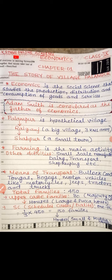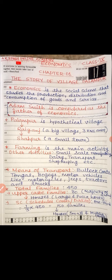Next topic is means of transport. Is Palampur a very old village, or does it have modern vehicles? In this village, bullock carts, tongas (horse-drawn carriages), and bogeys are shown. Bogeys are small vehicles; in some local languages they are called 'kaara'. Apart from these, the latest motor vehicles are also available — motorcycles, jeeps, tractors, and trucks. Since tractors, trucks, and jeeps are running here, it means the road system here is also good.